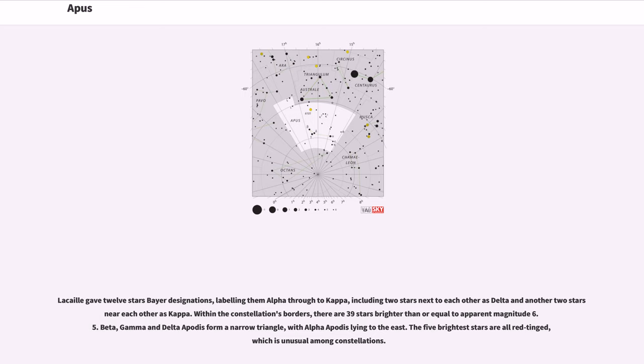Theta, Gamma and Delta Apodis form a narrow triangle, with Alpha Apodis lying to the east. The five brightest stars are all red-tinged, which is unusual among constellations.